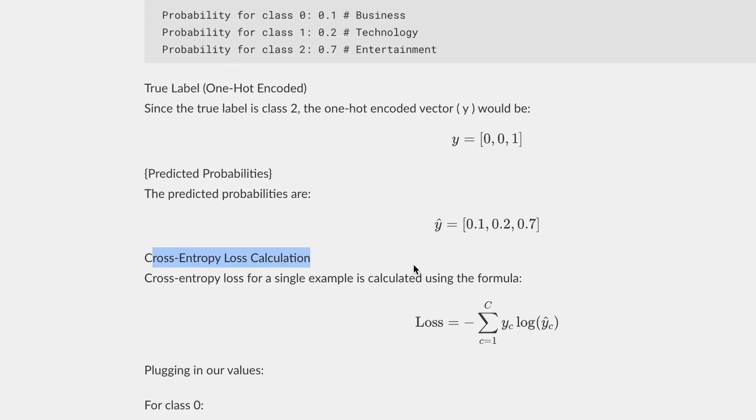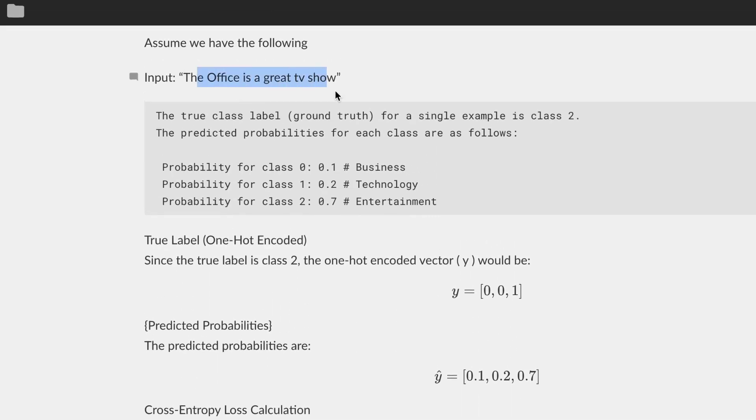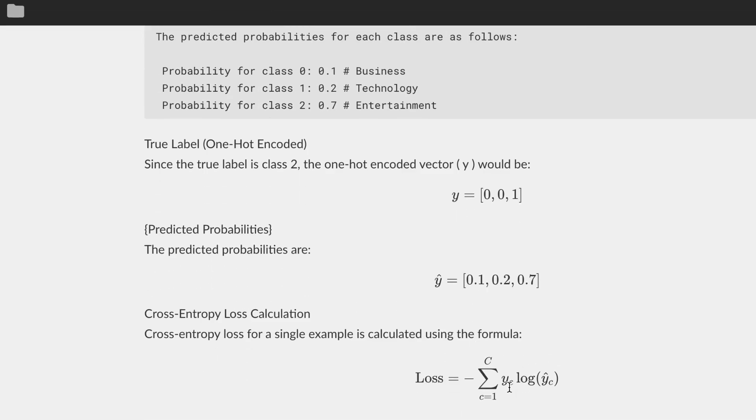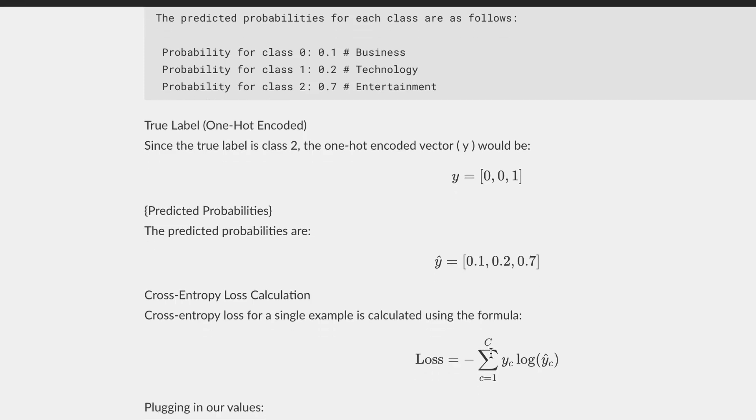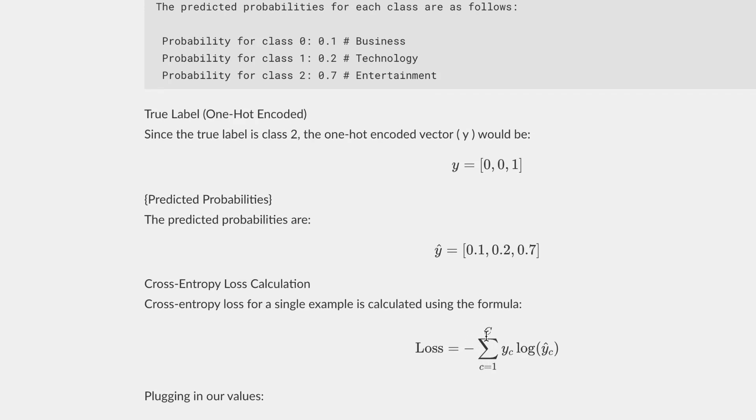Now we calculate the loss with the cross entropy loss function using this formula. In our example right now, we only have one example, so we're going to get one loss value. But in real life when you train, you have a bunch of values and you add them up, hence the summation notation.